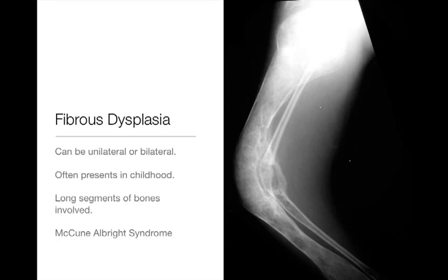Fibrous dysplasia is the first benign polyostatic condition we'll talk about. Polyostatic fibrous dysplasia tends to be a long lesion in a long bone, lytic in appearance, and often associated with weakening of the bone. You'll get bowing abnormalities, as seen in this patient with polyostatic fibrous dysplasia — a geographic lytic lesion affecting a long segment of nearly the entire tibia and also a shorter segment of the fibula, creating bowing abnormalities in both bones.